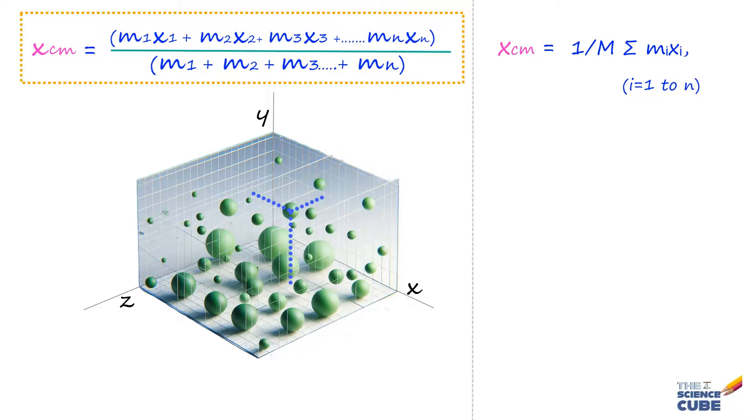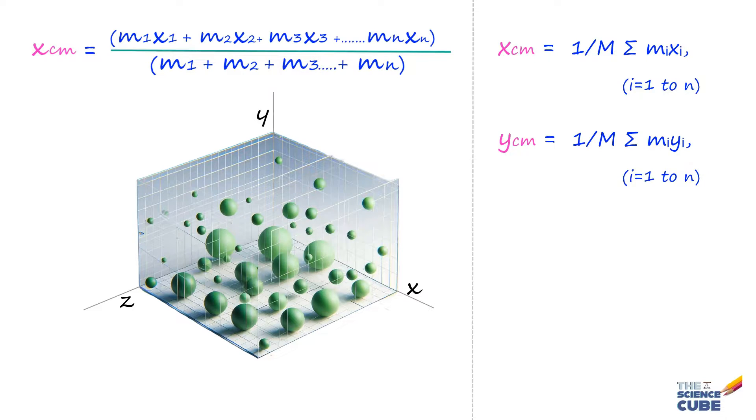So, the x, y, z coordinates of center of mass of n particles would be, xcm is what we just showed earlier, ycm would become 1 upon m sigma mi yi as i changes from 1 to n. That is now, instead of taking the x values, here we take the y coordinates of each particle. And likewise, zcm would be 1 upon m sigma mi zi.